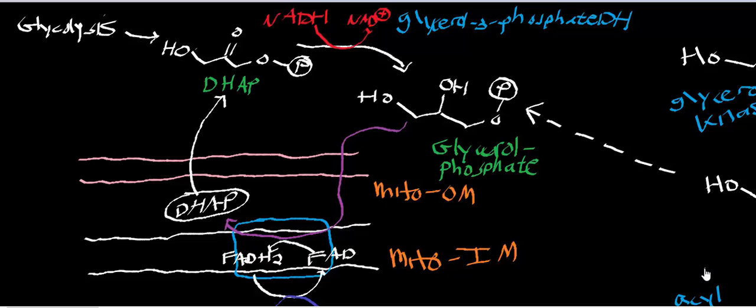Welcome back to the playlist on lipid biosynthesis. In this video, we're going to talk about how we originally synthesize a molecule known as phosphatidate, which you may also hear referred to in textbooks as phosphatidic acid. Phosphatidic acid is used as the primary building block to go to either triacylglycerols or other phospholipids. Phosphatidate is a phospholipid itself, although it's not usually found in membranes, and we'll focus on its biosynthesis here.